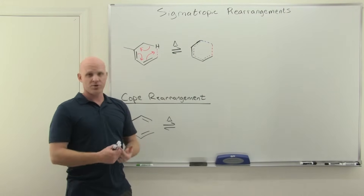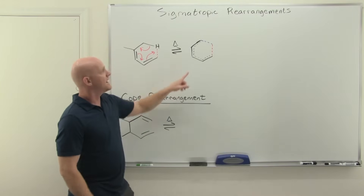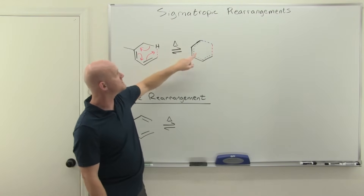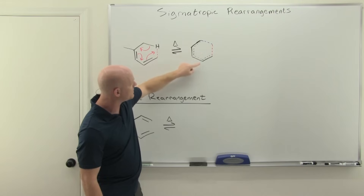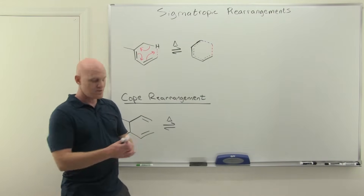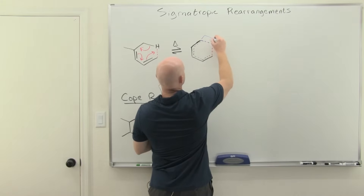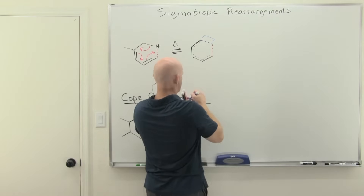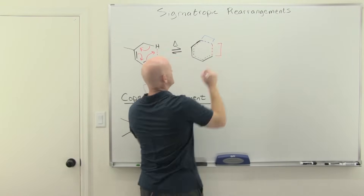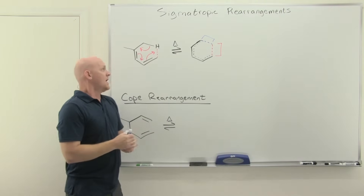The bonds that are forming or breaking that are sigma bonds are the ones I've signified in blue and red, because those are going to be useful to us. I want to really highlight those — just to show clearly where those new bonds were broken and formed.